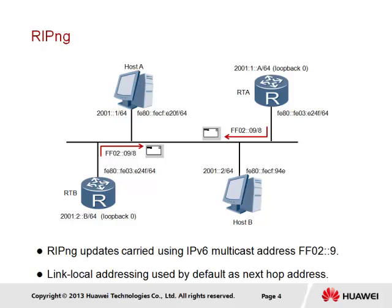For example, a packet heading to the global unicast destination address 2001::B found within RTB would be forwarded to the next hop of FE80::FE03:E24F. RIP-NG messages are advertised via the IPv6 reserved multicast address FF02::9, which is the logical equivalent of the RIPv2 multicast address 224.0.0.9.